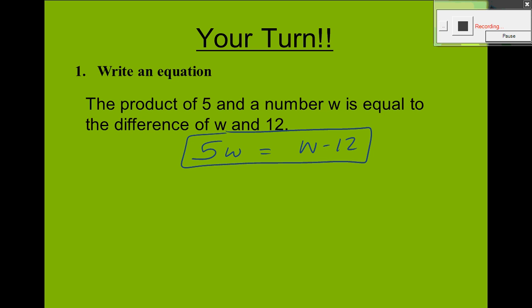Okay. How many people got this one here? Check out the board. 5W equals W minus 12. Is that right? Yes? Good. Okay. Here's the next one for you. I told you there was two. Right? Inequality. The sum of a number N and 4 is less than 13.